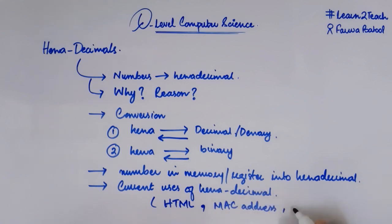Then how we are using it to write machine code or assembly code. These are some of the examples, some of the uses of hexadecimal numbers.